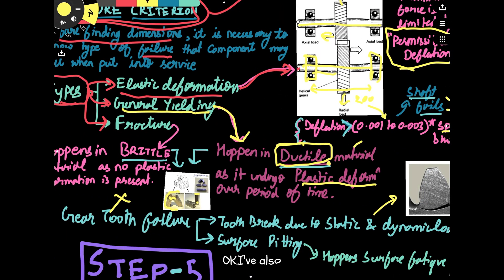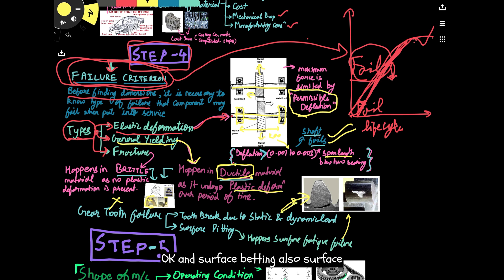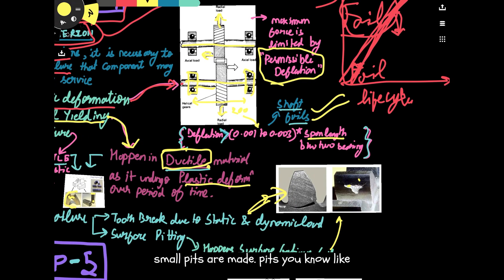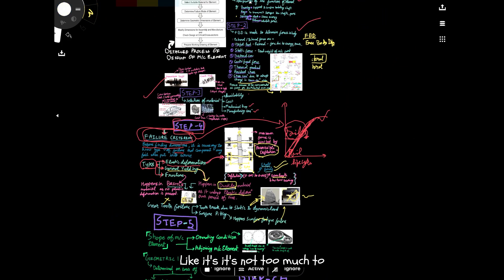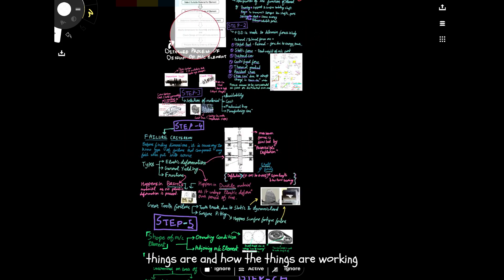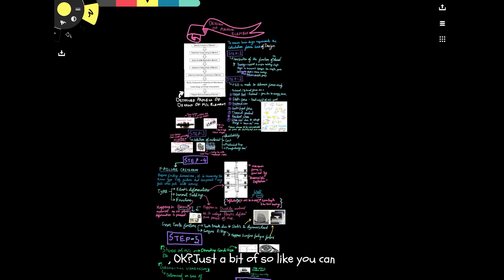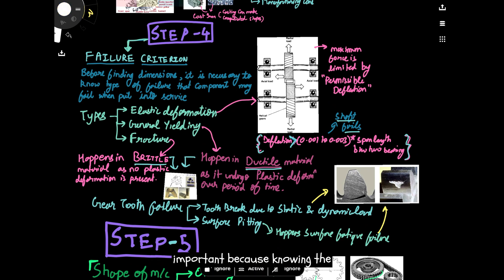As an example of gear tooth failure: a tooth breaks due to static and dynamic loading. There is also surface pitting. When a gear is subjected to force, small pits are made on the surface of the gears, and from there cracks initiate, propagate, and finally fail the gear.